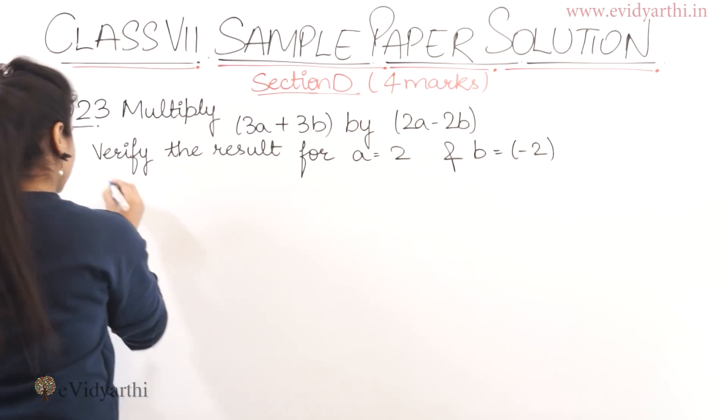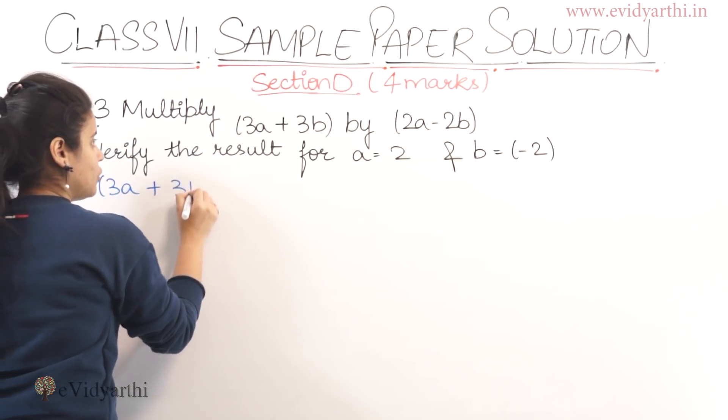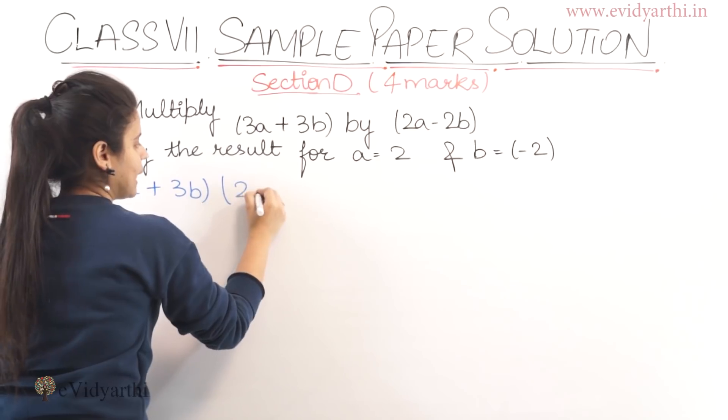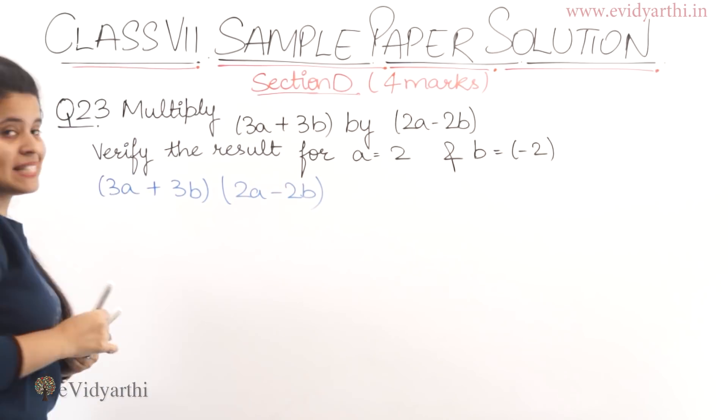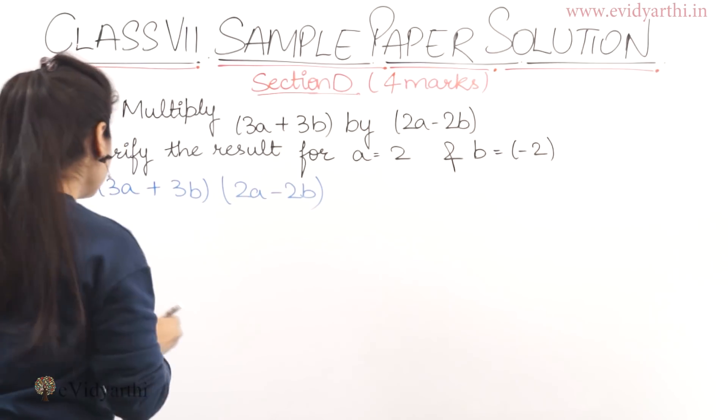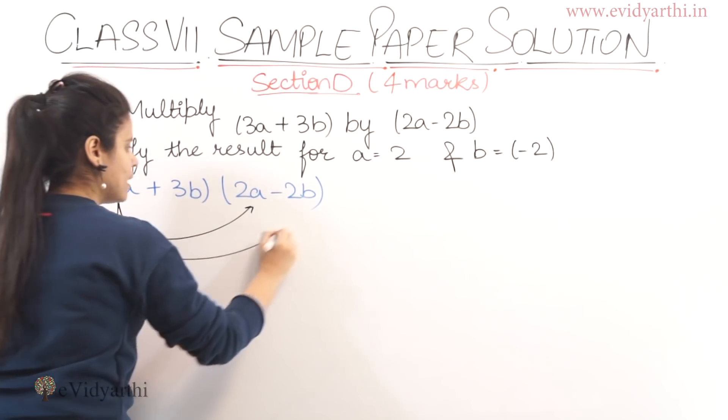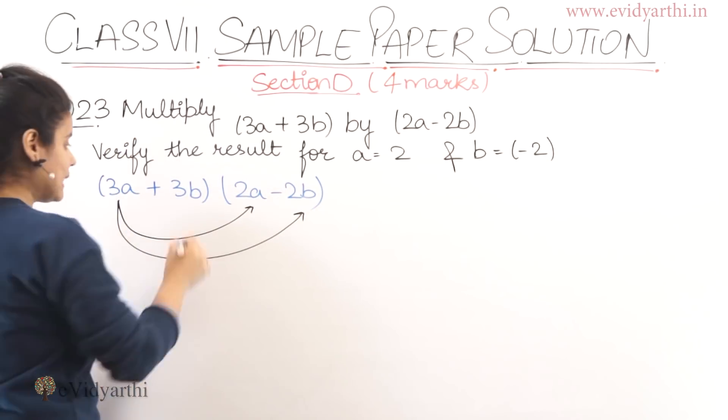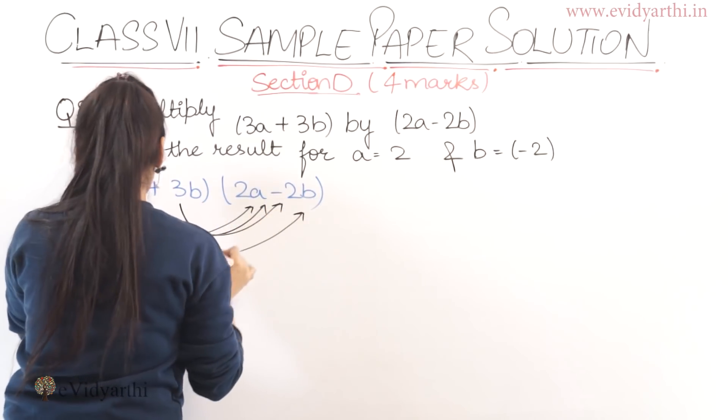First of all you have to multiply. So we have 3a plus 3b and multiply 2a minus 2b. Now we know what we have to do. The first one will multiply with this, and then this one will multiply. The second one will multiply and then this one will multiply.